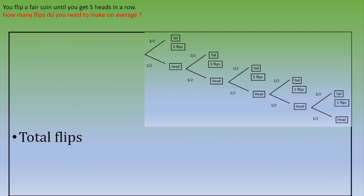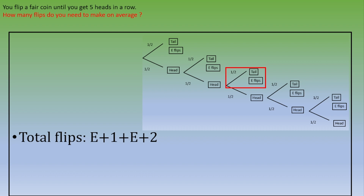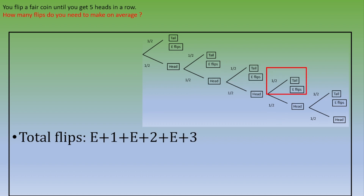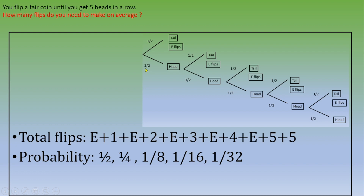Now let's count the total flips for each case. First case: E plus 1 flips. Second case: E plus 2. Third case: E plus 3. Fourth case: E plus 4. Fifth case: E plus 5. And the success case gives exactly 5 flips. The probabilities are: one half, one fourth, one eighth, one over 16, and one over 32.